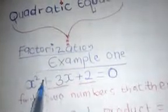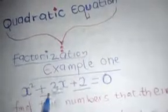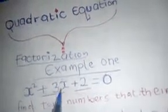See here we have 3x with a plus sign, and we have +2. So we are going to find numbers that if you add them they will give you +3, and if you multiply them they will give you +2. The numbers are +2 and +1.